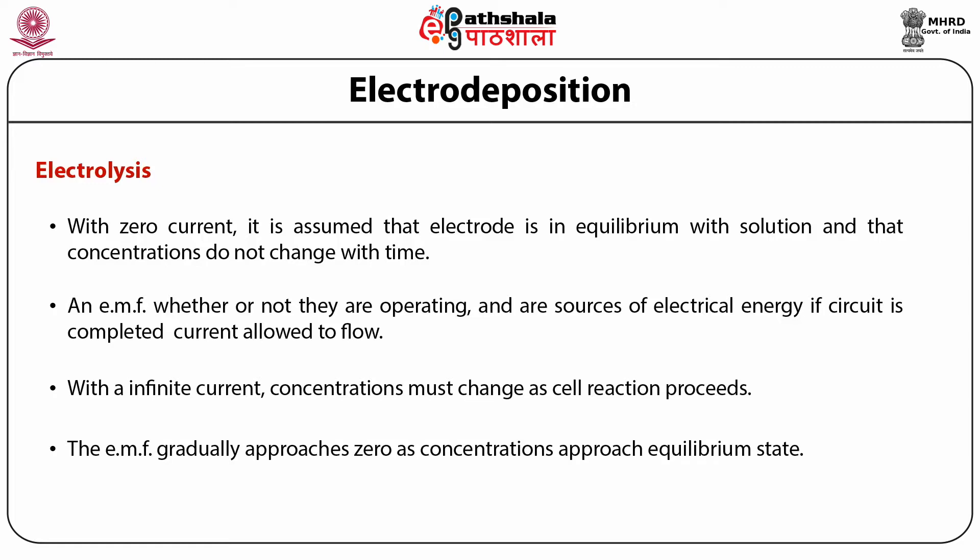Now let us add another component to the circuit. If the applied potential is greater than the cell potential E cell, then the current is reversed. Likewise, the cell reaction is reversed from its normal, spontaneous direction.